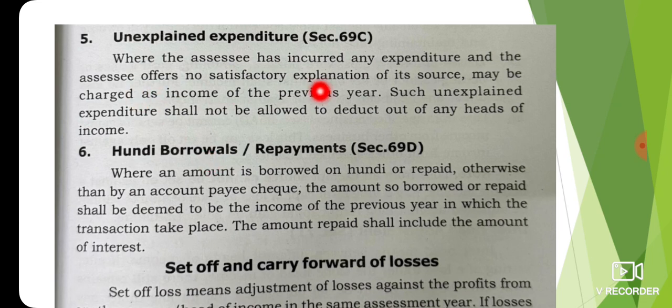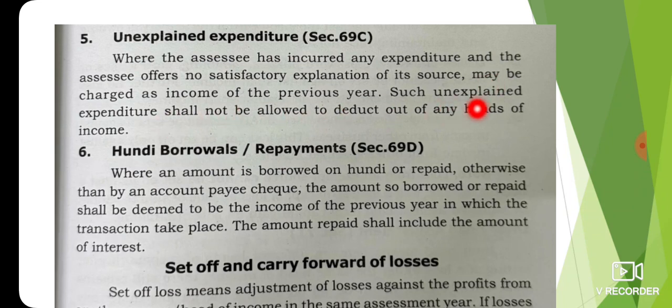Unexplained expenditure: where the assessee has incurred any expenditure and the assessee offers no satisfactory explanation for it, such amount may be charged as income.